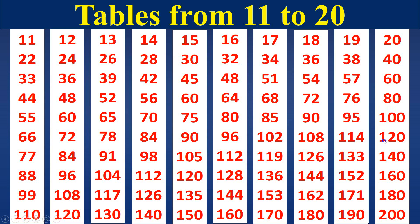20 times table. 20 ones are 20. 20 twos are 40. 20 threes are 60. 20 fours are 80. 20 fives are 100. 20 sixes are 120. 20 sevens are 140. 20 eights are 160. 20 nines are 180. 20 tens are 200.